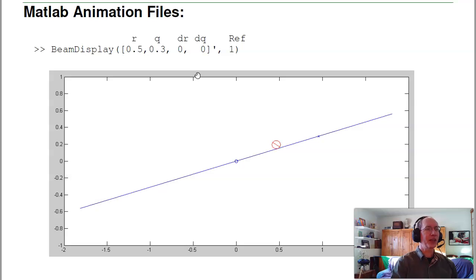In terms of animation, I've got a couple different programs. There's beam_display. What that does is I pass it a 4×1 vector and the set point. If I say, let's draw the beam at 0.5 meters, 0.3 radians, 0, 0 for velocities, my set point's at 1. Here's my set point—I want it to go 1 meter out. The ball is currently at 0.5 meters, and the angle is at 0.3 radians. That's what the beam_display does.